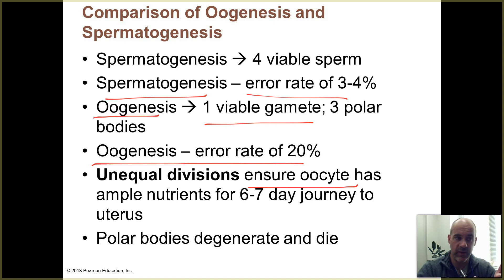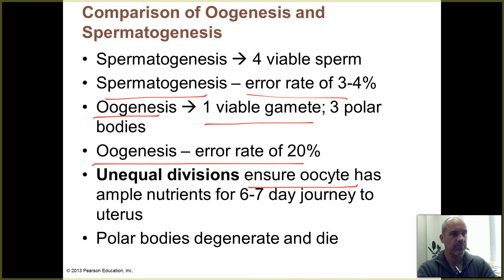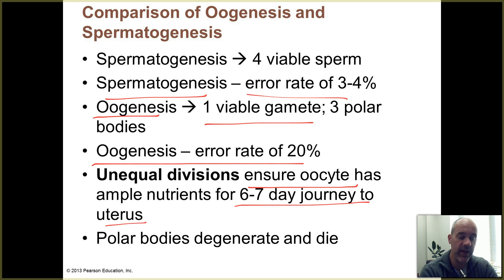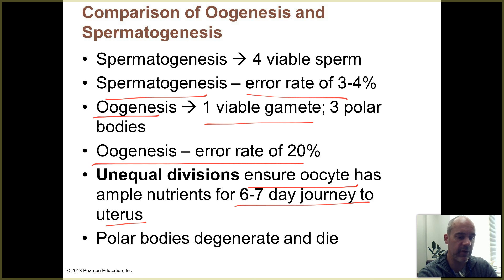Those stored nutrients are needed to support the early cell divisions that take place after fertilization. If an oocyte gets fertilized by a sperm, it takes six to seven days to travel from the fallopian tube all the way down to the uterus where it will implant, so it needs a lot of stored nutrients to support that journey.